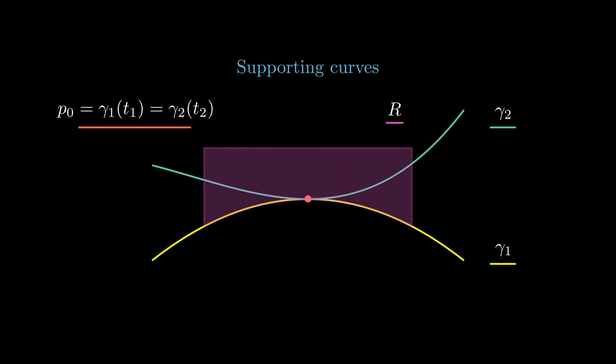Assume that two plane curves, gamma1 and gamma2, are tangent. We say that gamma1 locally supports gamma2 at p, if there is some epsilon and a region r in the plane, such that gamma2 remains in the closure of the region r along the interval t2 minus epsilon t2 plus epsilon.